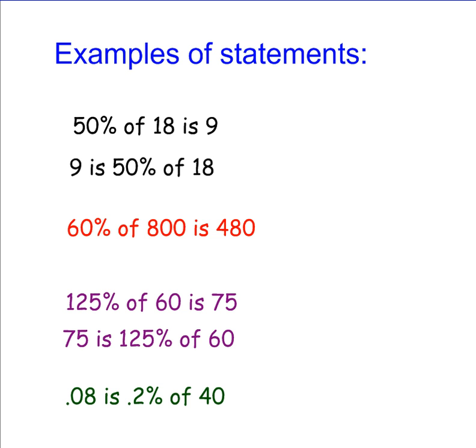60% of 800 is 480. The percent might be bigger than 100%. For example, we might have 125% of 60 is 75.